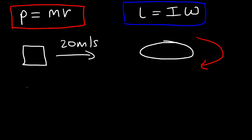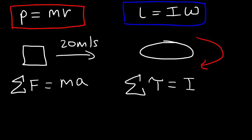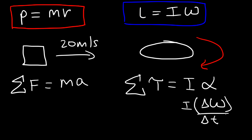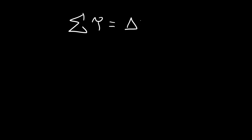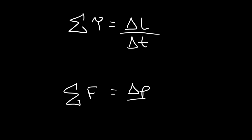There are some other equations to know. Newton's second law states that the net force acting on an object equals mass times acceleration. The net torque acting on an object equals the inertia of that object times the angular acceleration. Angular acceleration is the change in angular velocity divided by the change in time. Since inertia times omega is angular momentum, the net torque equals the change in angular momentum divided by the change in time — just as net force equals the change in linear momentum divided by the change in time.